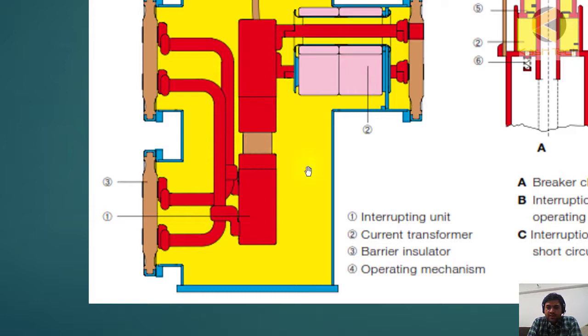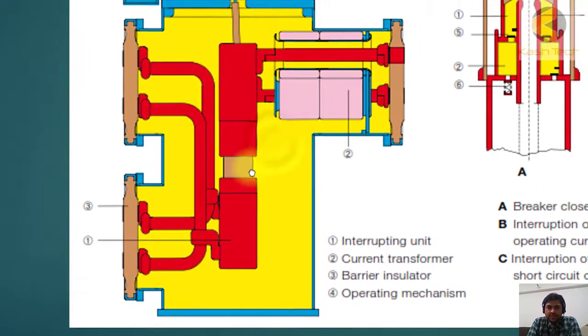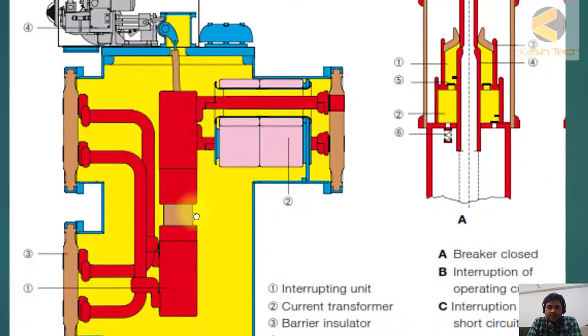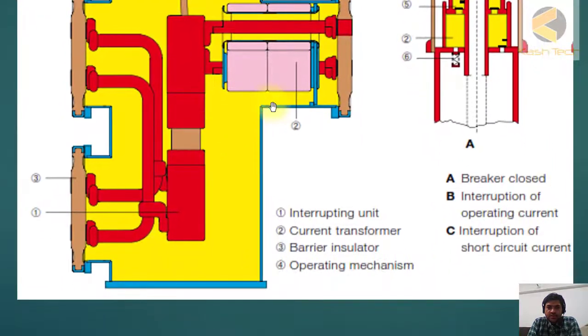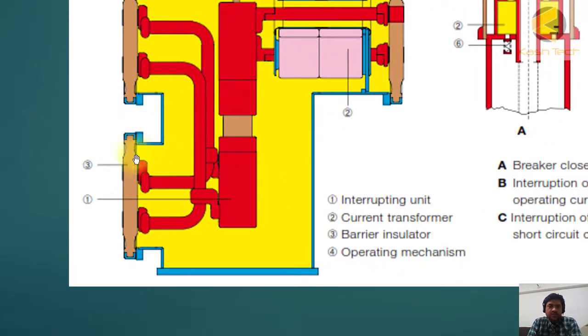Number two is the current transformer. You can see this is the CT. Number three is the barrier insulator. This is the barrier insulator. What is the purpose of this barrier insulator?